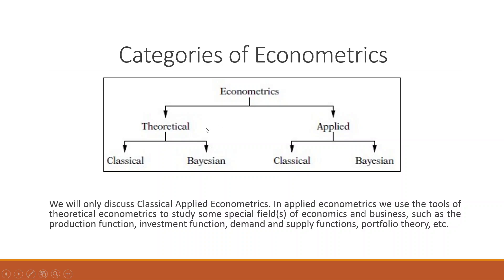Econometrics can be divided into theoretical and applied. Theoretical can further be classified into classical and Bayesian, and so can applied. We will only be talking about classical applied econometrics. In applied econometrics, we use the tools of theoretical econometrics to study specific fields of economics and business, such as production functions, investment functions, and demand and supply functions. For more videos on econometrics, please subscribe to the channel.